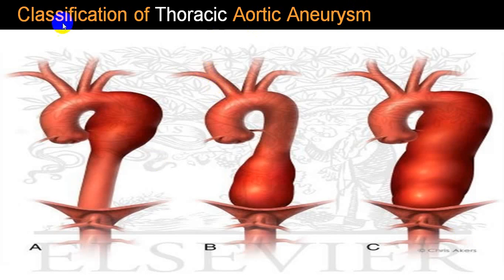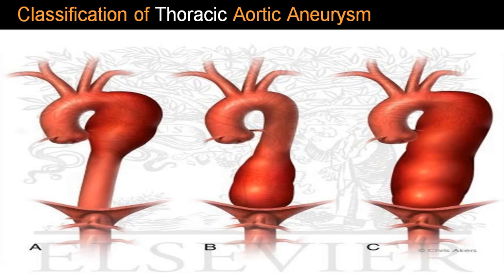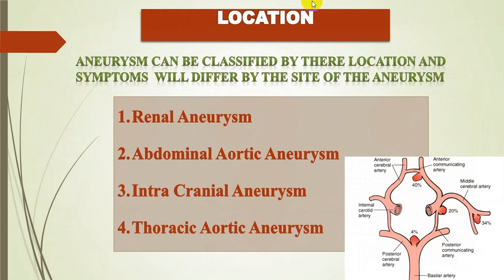Classifying according to the thoracic portion of the aorta: a small portion close to the subclavian is called A, close to the diaphragm is B, and if it extends from subclavian all the way to the diaphragm it is called C. Location-wise: renal artery involvement, abdominal aorta, cranial artery — called cerebral or berry aneurysms — and thoracic aorta involvement, called thoracic aortic aneurysms.